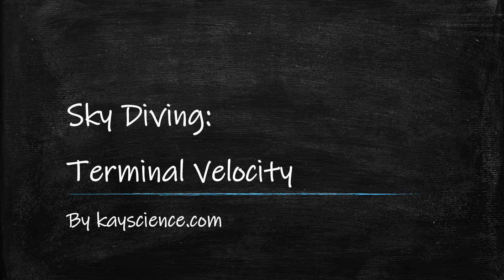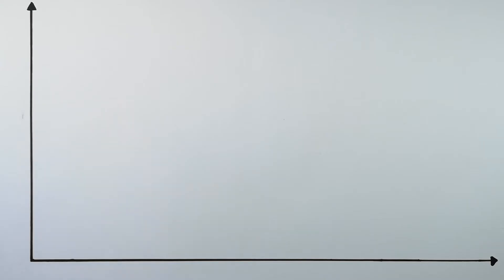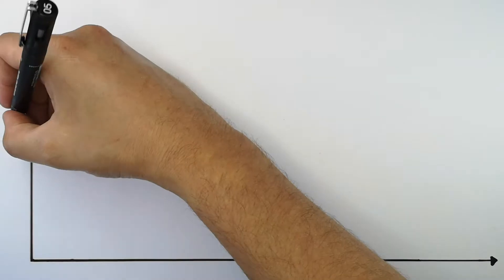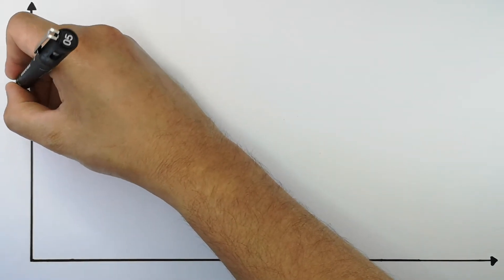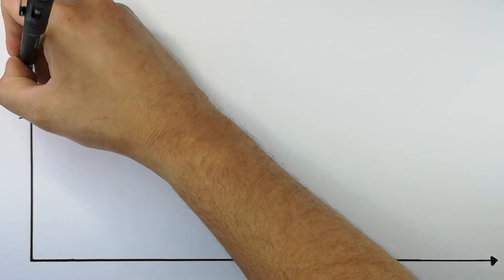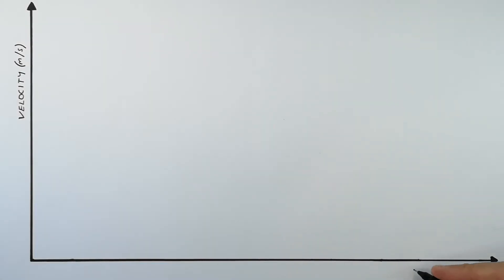Skydiving and Terminal Velocity by kscience.com. This here is a velocity-time graph, with velocity up the y-axis and time in seconds across the x-axis.